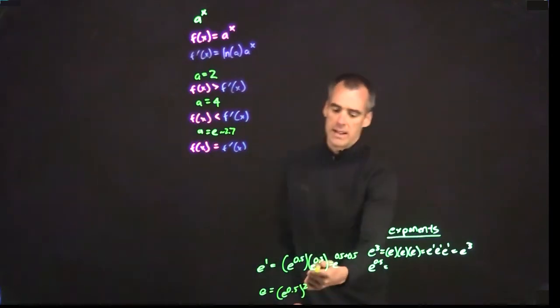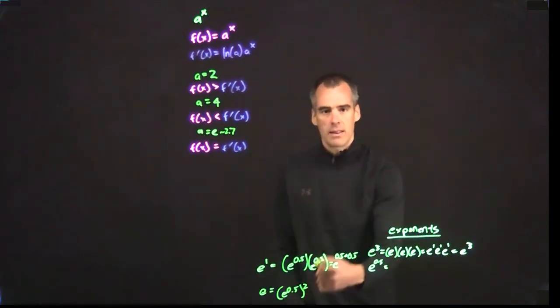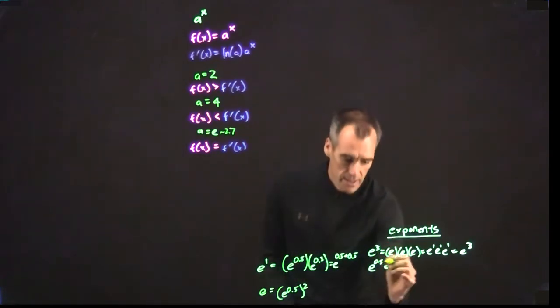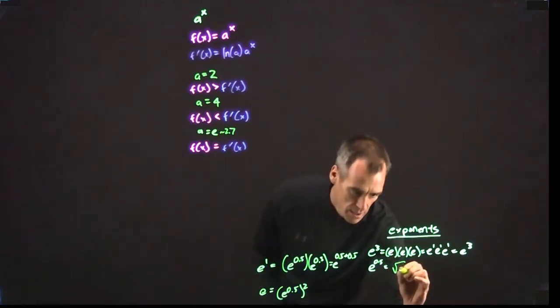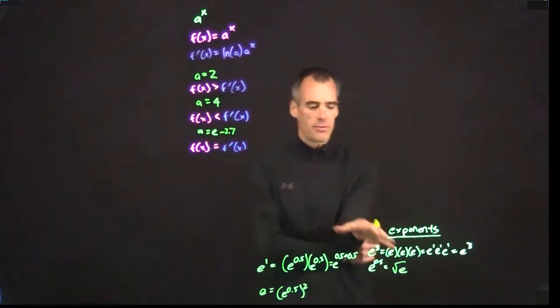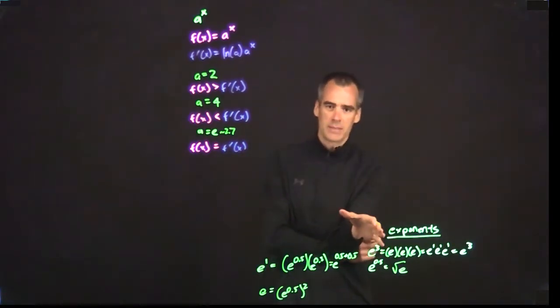Basically, this is the exponential math we can use to say e to the 0.5 is just the square root of e. Just as a little reminder what exponents are. But if I understand what exponents are, then what the heck is e to the i something? E to the 3i?